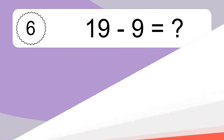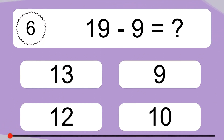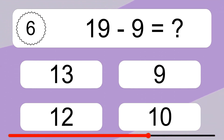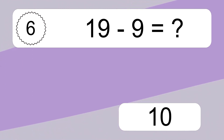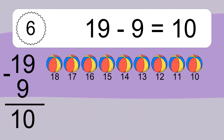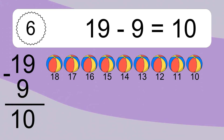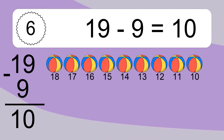19 minus 9 equals what? 19 minus 9 equals 10. Let's count it: 18, 17, 16, 15, 14, 13, 12, 11, 10.